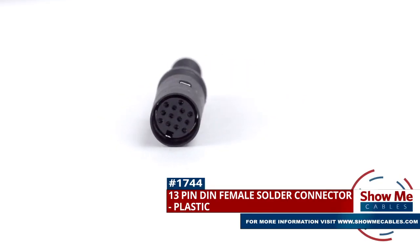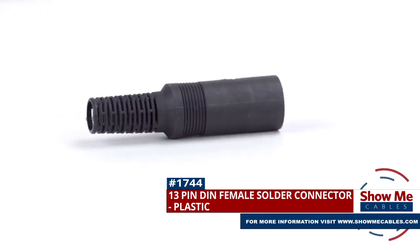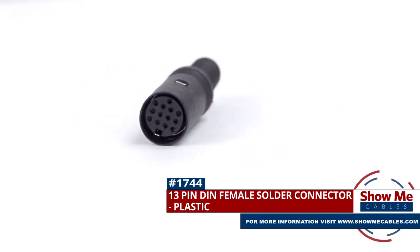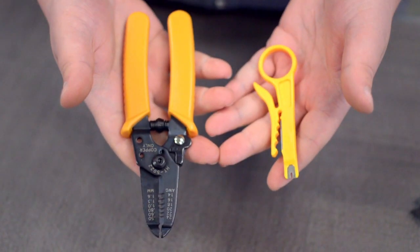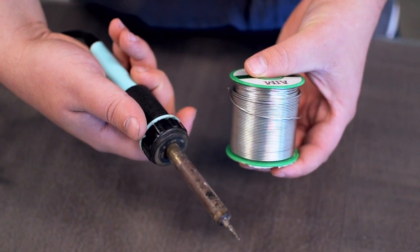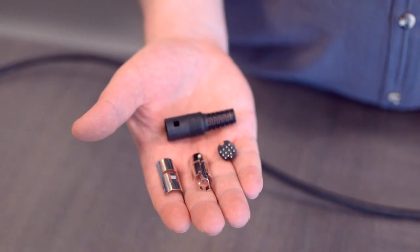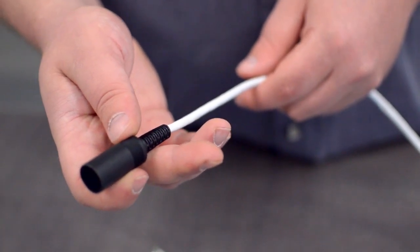This is the 13-pin DIN female solder connector. To install, you will need the following items: low voltage cable, wire strippers, solder and soldering iron, and the DIN connector. Start by inserting the plastic boot over the jacket.